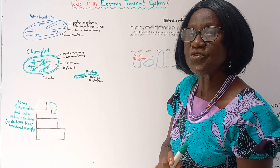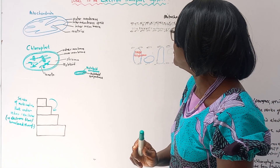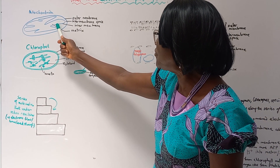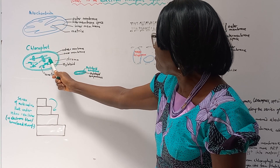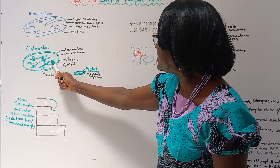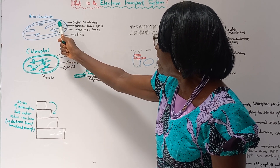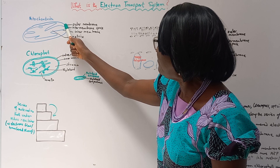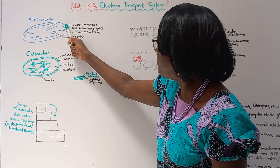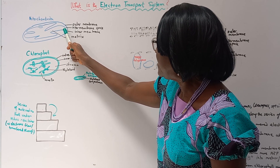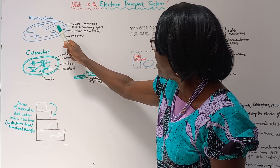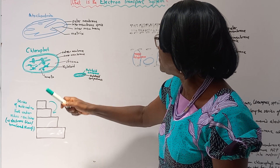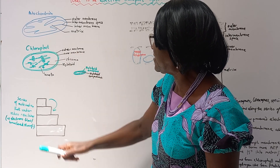The electron transport chain is related to the mitochondrion and the chloroplast. Quickly, the mitochondrion structure: we have an outer membrane, inner membrane, intermembrane space, and matrix.